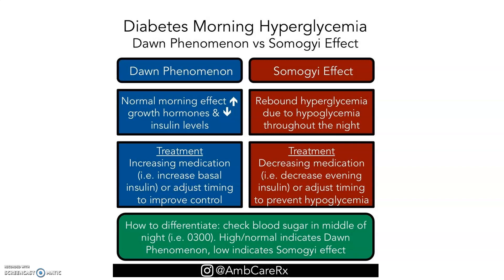Let's look at this graph from Ambicare. In the Dawn phenomenon — the normal morning effect — you will see that there is an increase in growth hormone and a decrease in insulin level. With insulin level decreasing, that means the blood glucose is very high. Now for the Somogyi effect, which is kind of a rebound hyperglycemia, the insulin lowers the blood glucose and then the body kicks in and increases the blood glucose level by turning glycogen into glucose.